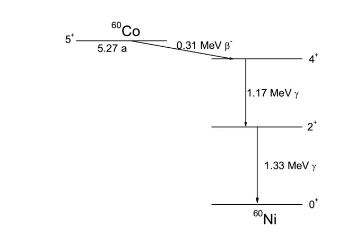In beta decay, the proton number increases by 1. For a positron decay and also for an alpha decay, the oblique arrow would go from right to left, since in these cases the proton number decreases.